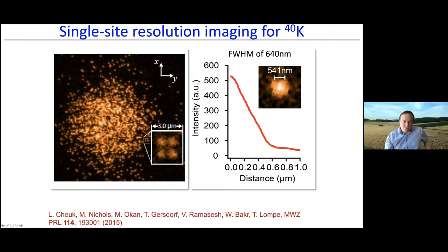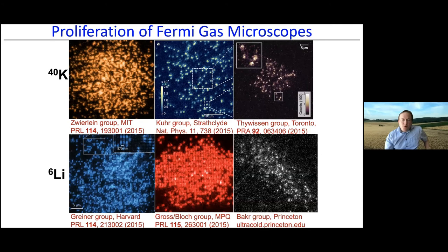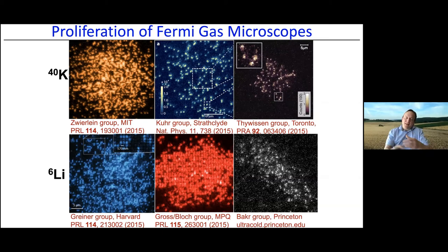In 2015, following initial work on potassium-40, many microscopes appeared in quick succession. A striking image from the Christian Gross and Immanuel Bloch group in Munich shows a dense lattice filled with fermions one next to the other — exactly the cartoon of Pauli-exclusion-enforced spacing drawn in 2009, now made real: spin-polarized fermions forced apart by the Pauli principle, directly visible in a single image.